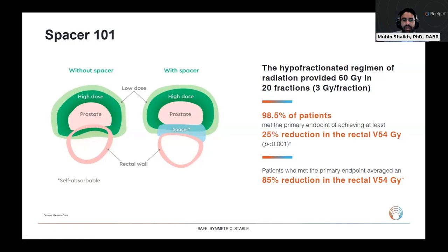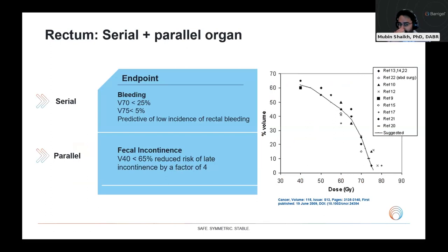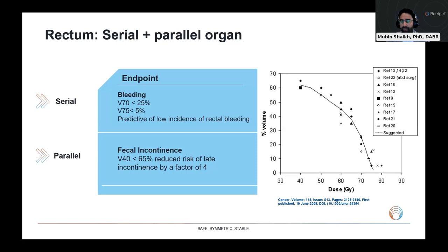You might say we've been treating prostate without issues. Well, the rectum is a unique organ — it's about both parallel and serial behavior, depending on what metric you're using. If your endpoint is bleeding, the rectum behaves like a serial organ, and that's where we get numbers like V70 less than 25% and V75 less than 5%. If your endpoint is fecal incontinence, the rectum behaves like a parallel organ, and metrics like V40 become very important. Ultimately, the rectum is a sensitive organ at risk. We want to limit maximum doses because of its serial nature, but also reduce cumulative dose because of its parallel nature.